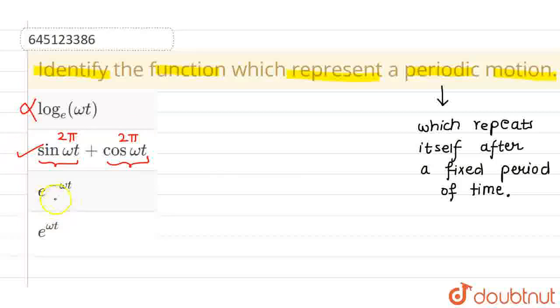Now, coming to third, which is e raised to power minus omega t. We know that exponential function is not a periodic function. Therefore, it cannot represent periodic motion. And neither d option, which is ultimately the same function, which is represented in c. This is e raised to power omega t. Again, this is exponential. So, this cannot represent a periodic motion because this is not a periodic function.